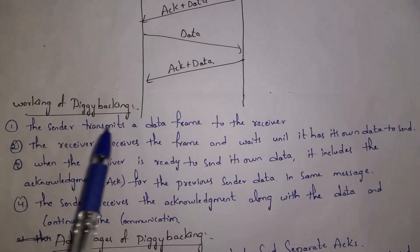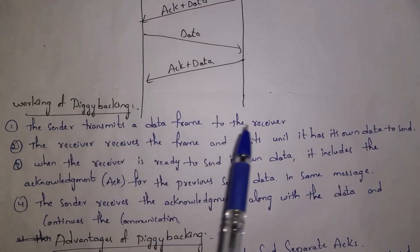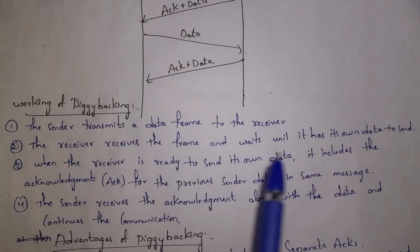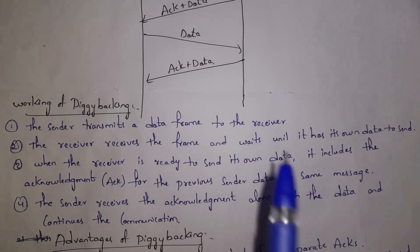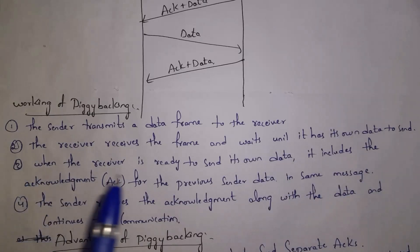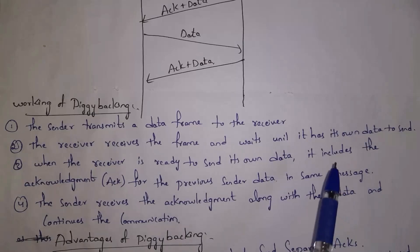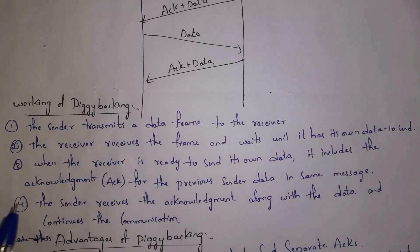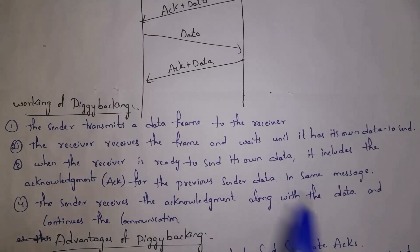Whenever the sender transmits a data frame to the receiver, the receiver receives the frame and waits until it has its own data to send. When the receiver is ready to send its own data, it includes the acknowledgement for the previous sender's data in the same message. So the sender will receive both acknowledgement and receiver data. The same communication process will continue.